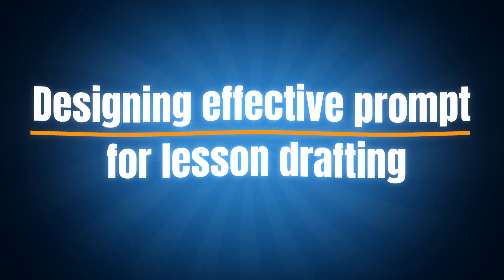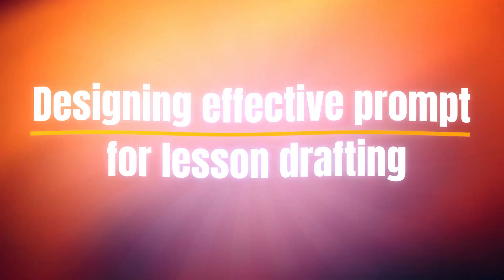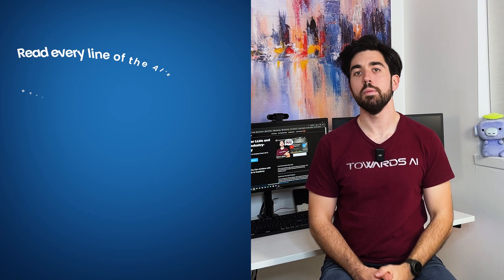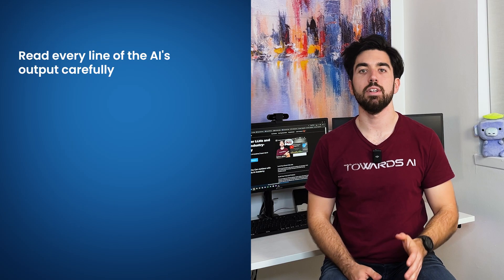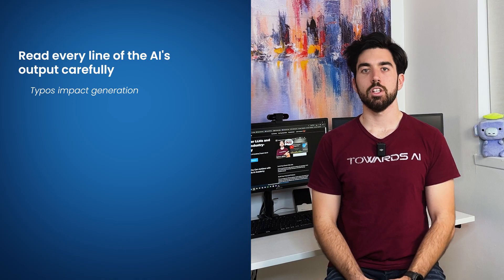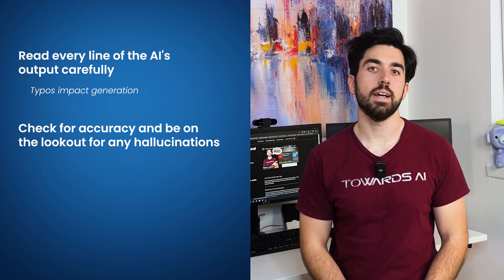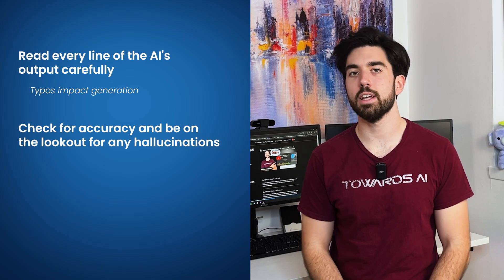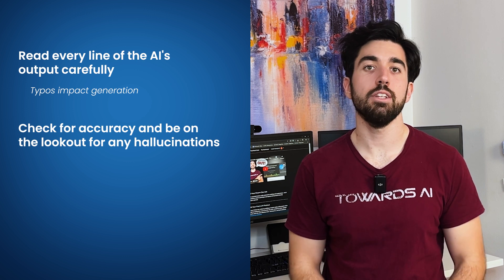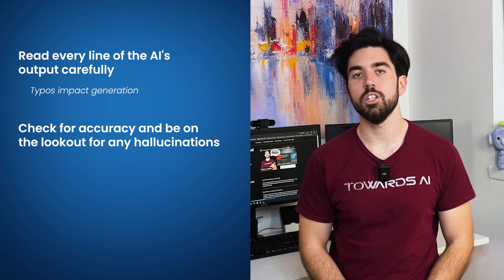Now, let's talk about crafting good prompts for drafting a lesson from your source materials. Here's a good example — you can find all of them in the video description. Remember to always read every line of the AI's output carefully; check for accuracy and be on the lookout for any hallucinations. This might mean it doesn't save you as much time as you'd hoped, but it's essential. You don't want to include incorrect information in your lesson. AI isn't magic and needs work, but it makes the whole process much easier.